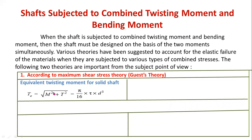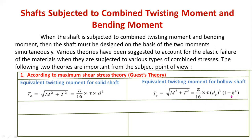For a solid shaft using maximum shear stress theory, equate T_E to the torsion formula: T_E = (π/16) × τ × D³. For a hollow shaft, T_E = √(M² + T²) = (π/16) × τ × D₀³ × (1 − K⁴), where D₀ is the outer diameter and K = d_i/D₀ is the diameter ratio.